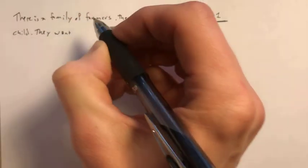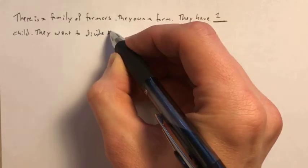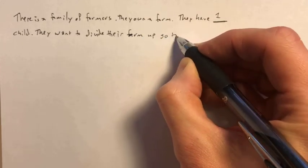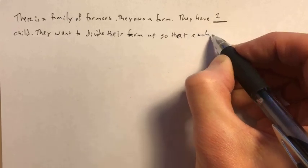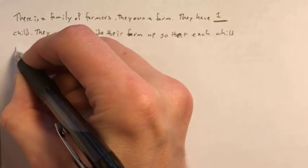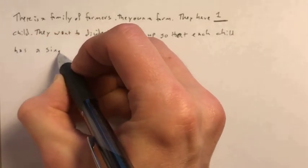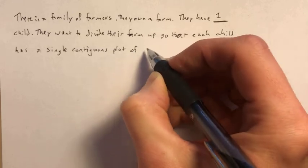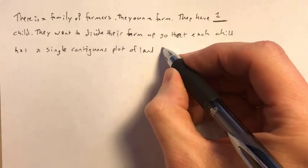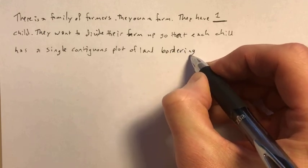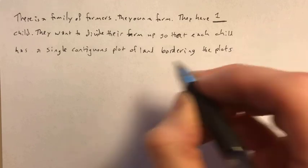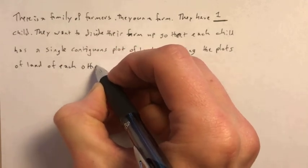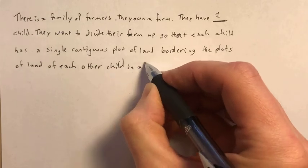They want to divide their farm up so that each child has a single contiguous plot of land bordering the plots of land of each other child in a length of fence.